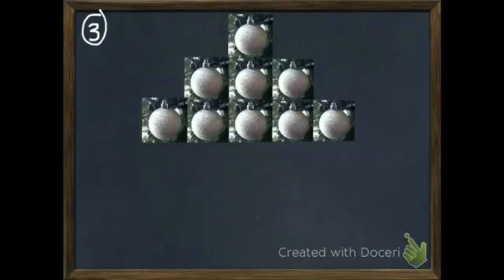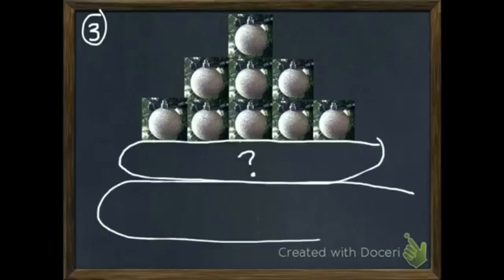And number three. I start with one ornament at the top, then three, then five. If I kept expanding this pattern, what would I have on the next two rows?